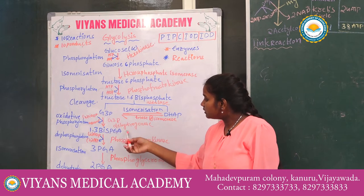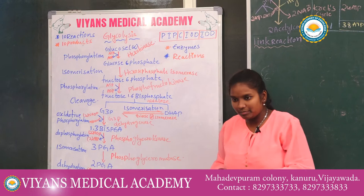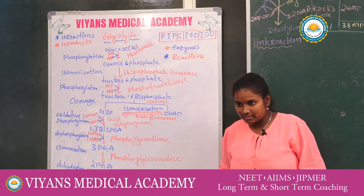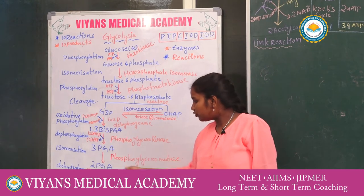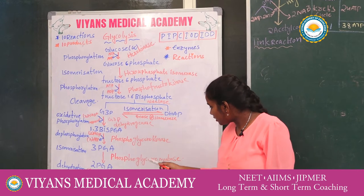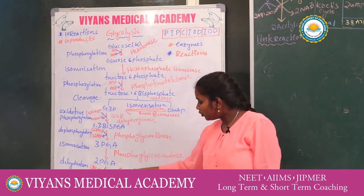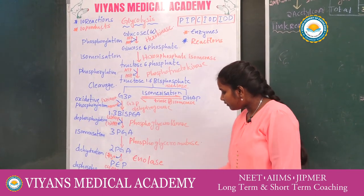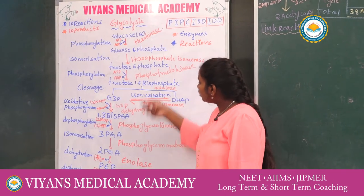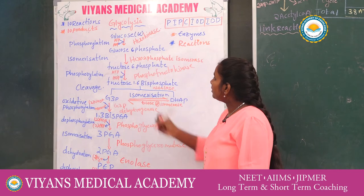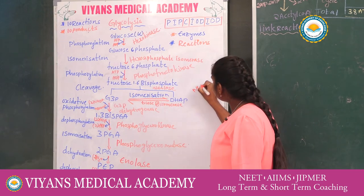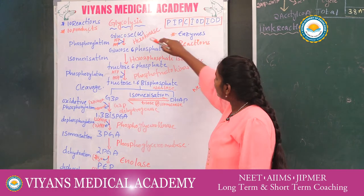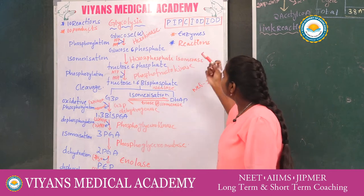G3P is converted into 1,3-bisphosphoglycerate in presence of G3P dehydrogenase. 1,3-bisPGA is converted into 3-PGA by phosphoglycerate kinase. 3-PGA is converted into 2-PGA by phosphoglycerate mutase. 2-PGA is converted into PEP by enolase. Two PEP molecules are converted into pyruvic acid by pyruvate kinase. In these reactions, 4 ATP are produced and 2 ATP are consumed, giving a net of 2 ATP.